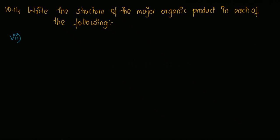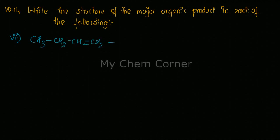Next is question number 7. Here you have CH3CH2CH double bond CH2 plus HBr. Here, along with this on the arrow, we have a peroxide.